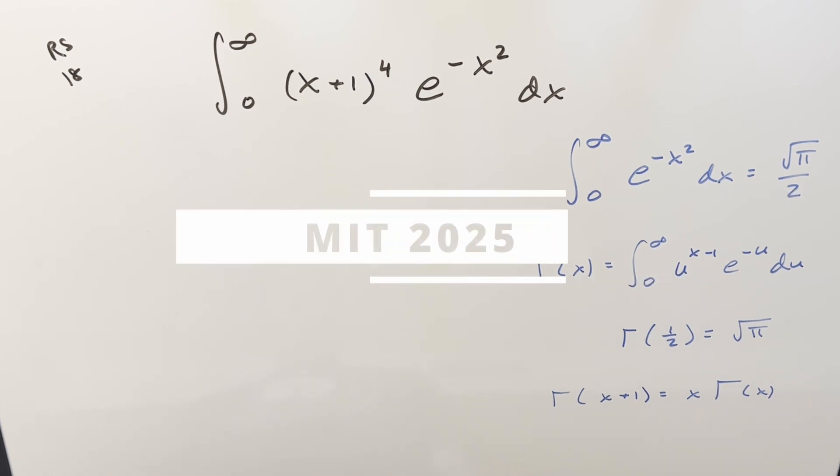Okay, we have here today another integral from MIT Integration B2025, regular season, problem 18. We have the integral from 0 to infinity, (x + 1) to the 4th, times e^(-x^2) dx.